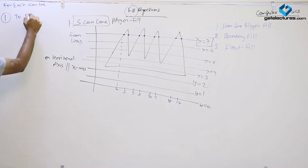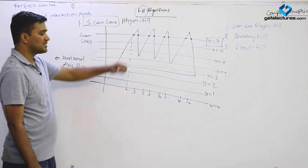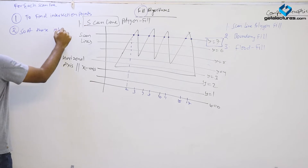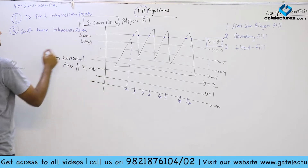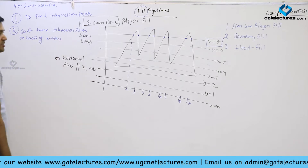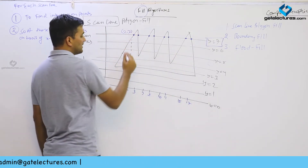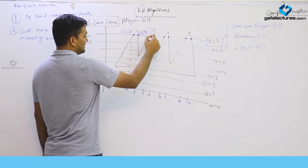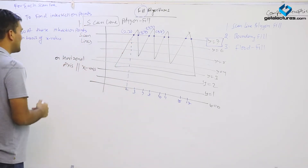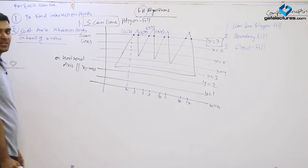Once we have found the intersection points, the second step is to sort these intersection points on the basis of their x values. So the points could be (2,7), (3,7), (7,7), (9,7) — we sort them to make sure they are in the correct order on the x-axis.